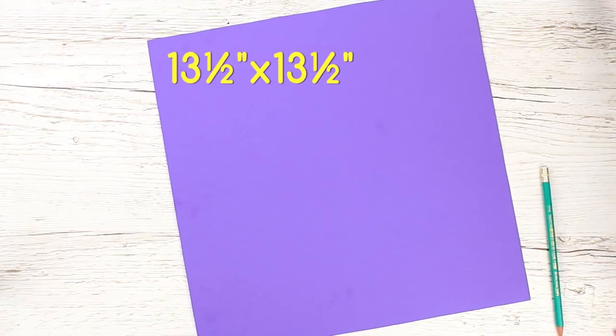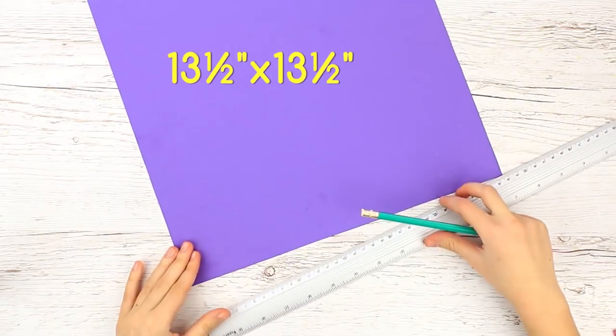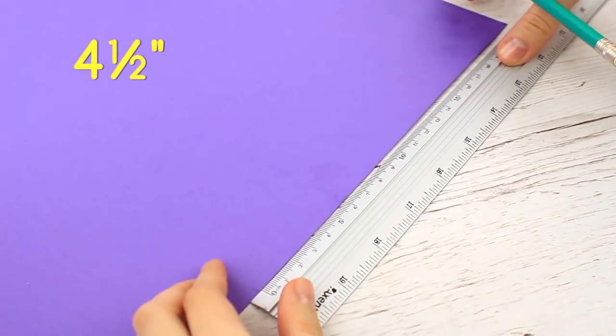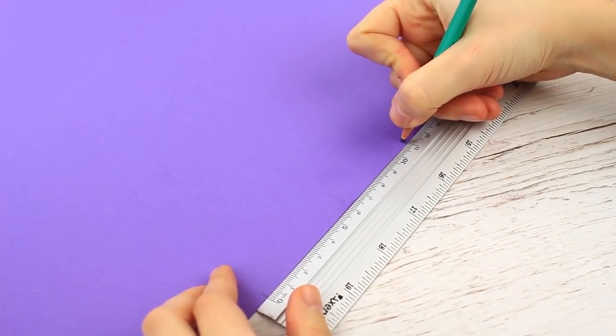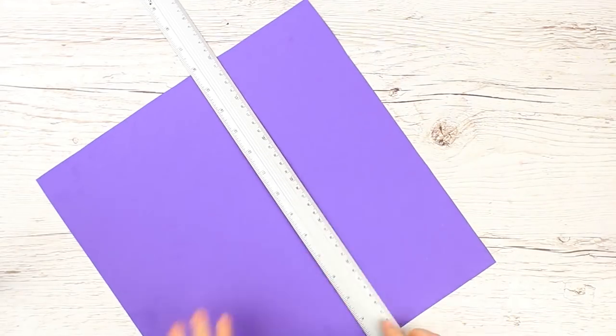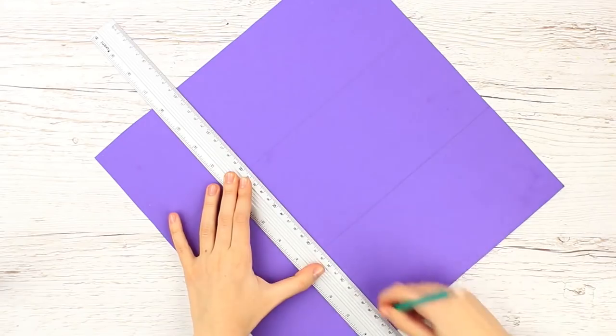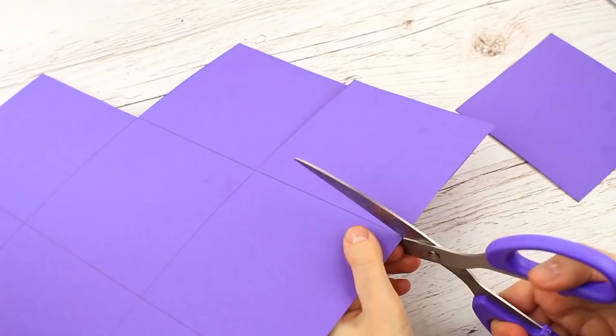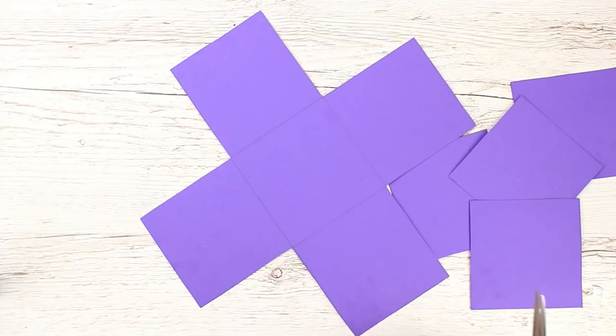Take another cardboard for a middle layer 13 and a half inches by 13 and a half inches. Mark the paper every four and a half inches. Connect the base with the straight lines to get the tic-tac-toe border pattern. Cut off the corner squares. We've got the plus sign shape detail.